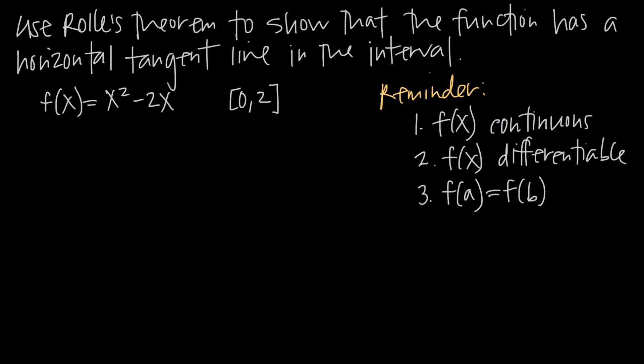In this video, we're talking about Rolle's theorem and how to use Rolle's theorem to show that a function has a horizontal tangent line inside of an interval. In this particular problem, we've been given the function f(x) = x² - 2x, and we're being asked to show that there's some value inside the interval 0 to 2 where f(x) has a horizontal tangent line.